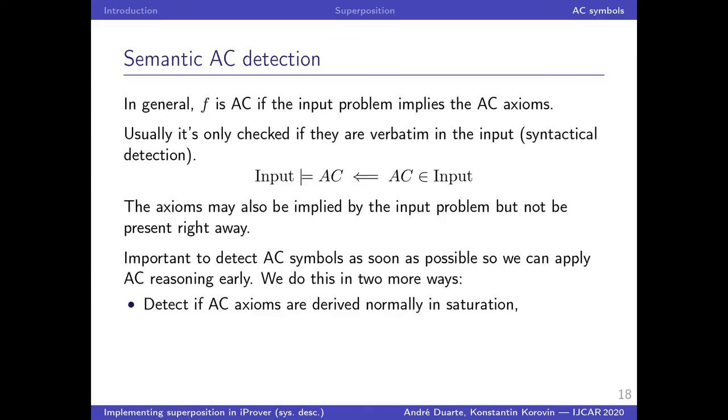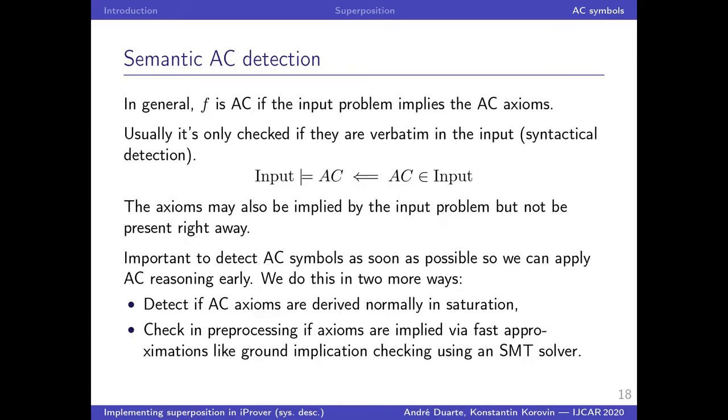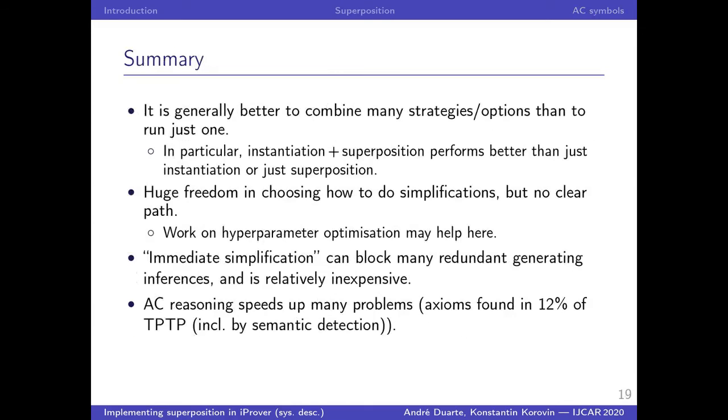So we attempt to do this by, first of all, simply detecting if AC axioms ever show up during normal saturation, but also specifically checking entailment of these axioms before we start saturation during preprocessing, by checking if the axioms are implied using some fast approximation for any candidate symbols that are binary and correctly typed. And that could be candidates for AC symbols. Okay, so that's a quick summary, and thank you for listening.